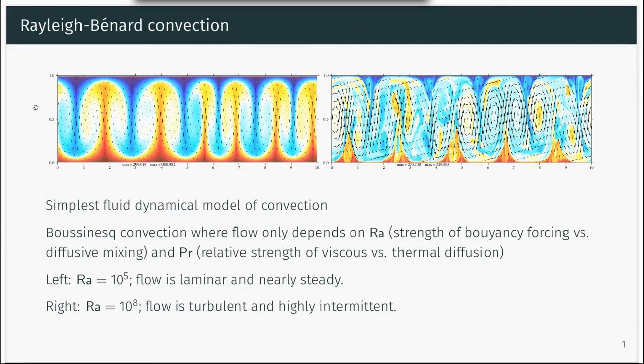The left-hand plot shows the Rayleigh-Benard convection for a Rayleigh number of 10 to the power 5, where the flow is laminar and nearly steady with convective rolls transporting heat between the top and bottom boundaries. At a Rayleigh number of 10 to the 8, as shown on the right-hand side, the flow is turbulent.